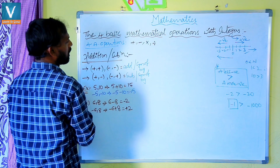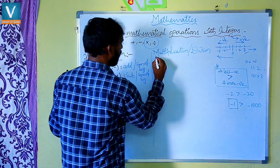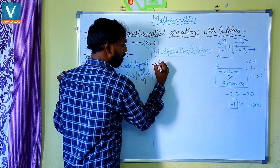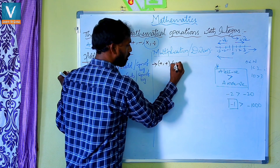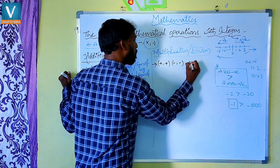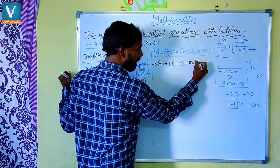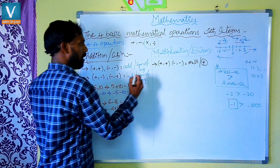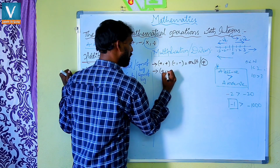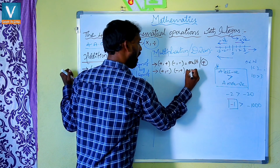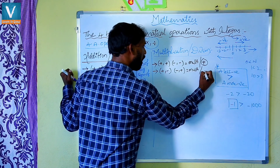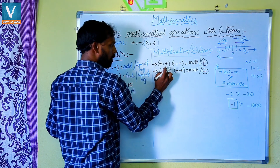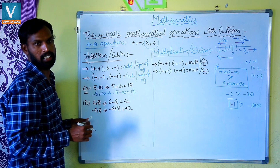Next, under multiplication and division, we again have two cases. Case one: if two like signs — two positive or two negative — first we multiply, then we give the positive symbol. Case two: when given alternate symbols — plus and minus, or minus and plus — first we multiply, then we give the minus symbol. So minus into plus is minus, minus into minus is plus, plus into minus is minus.